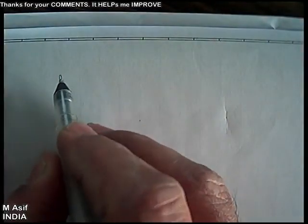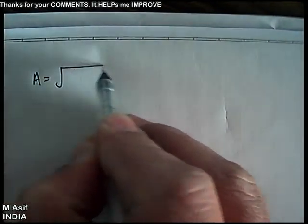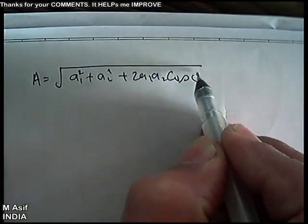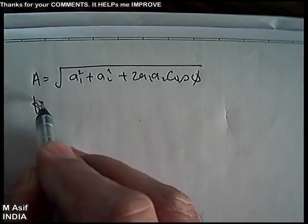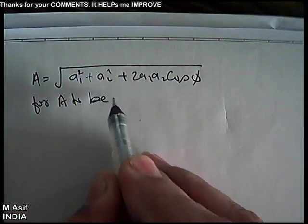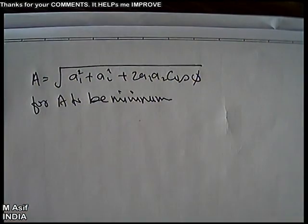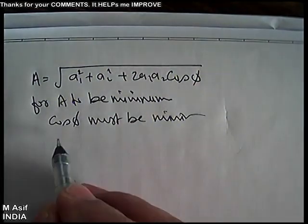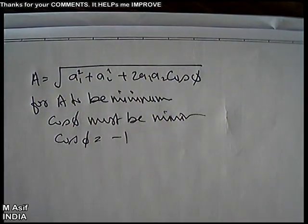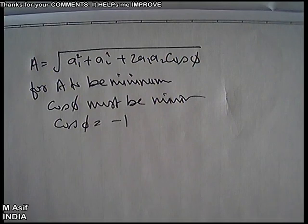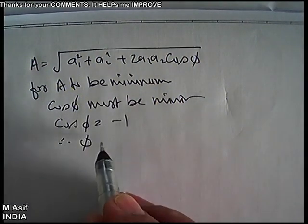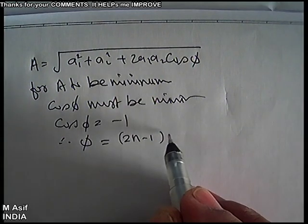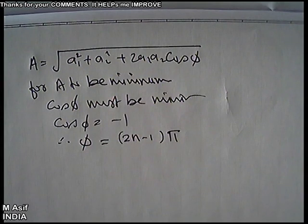For A to be minimum, start from the formula A = √(a1² + a2² + 2a1a2·cosφ). For A to be minimum, cosφ must be minimum. The minimum value of cosφ is −1. This is possible when φ = (2n − 1)π, where n starts from 1.